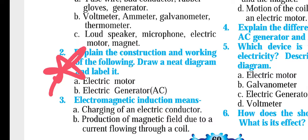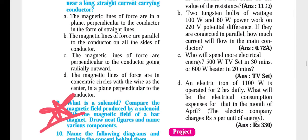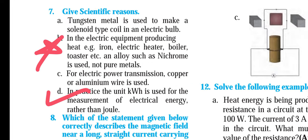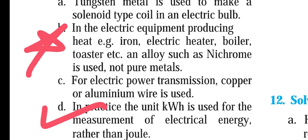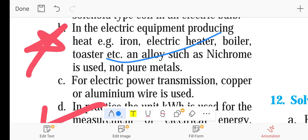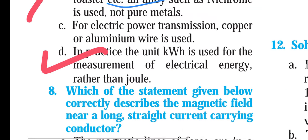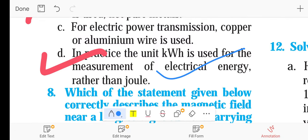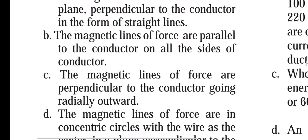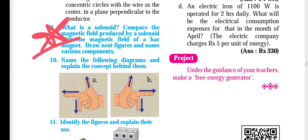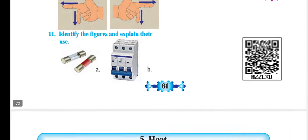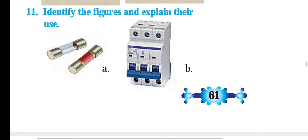You have to practice the diagram because it's a 5-mark question — electric motor and electric generator. For scientific reasons: number 1, electric equipment producing heat, example iron — mark this important. And D: in practice the unit kilowatt-hour is used for measurement of electric energy rather than joule. What is solenoid — I have already marked it. Three diagrams: identify the figure and explain the uses.